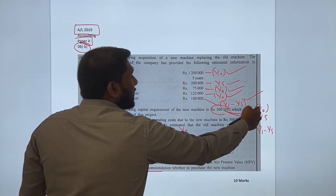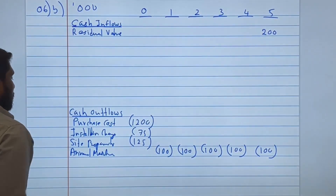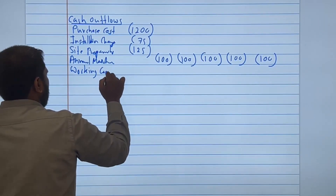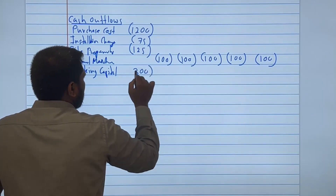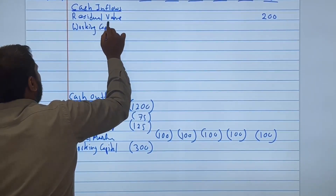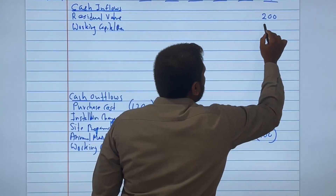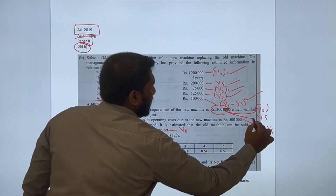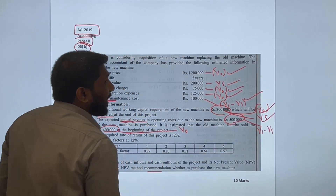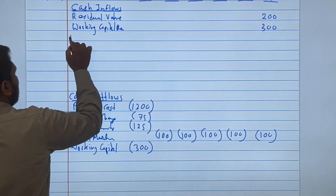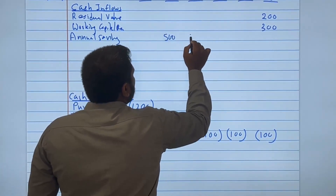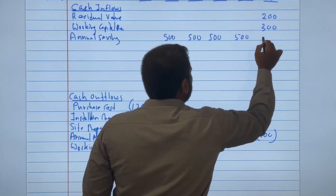For working capital, there are two adjustments: 300,000 as a cash outflow in year 0, and 300,000 as a cash inflow in year 5 when it is recovered. The annual saving is 500,000 per year — a cash inflow for years 1 to 5, since savings are treated as cash inflows.